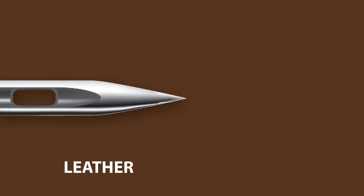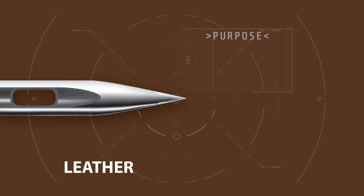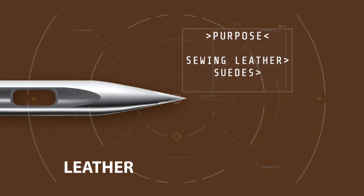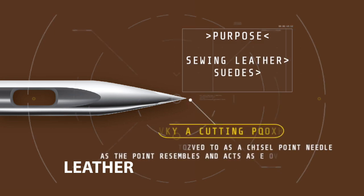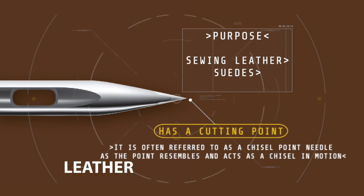The leather needle has a cutting point and is used for sewing leather, suede and difficult-to-sew projects. It is often referred to as a chisel point needle because the point resembles and acts as a chisel in motion.